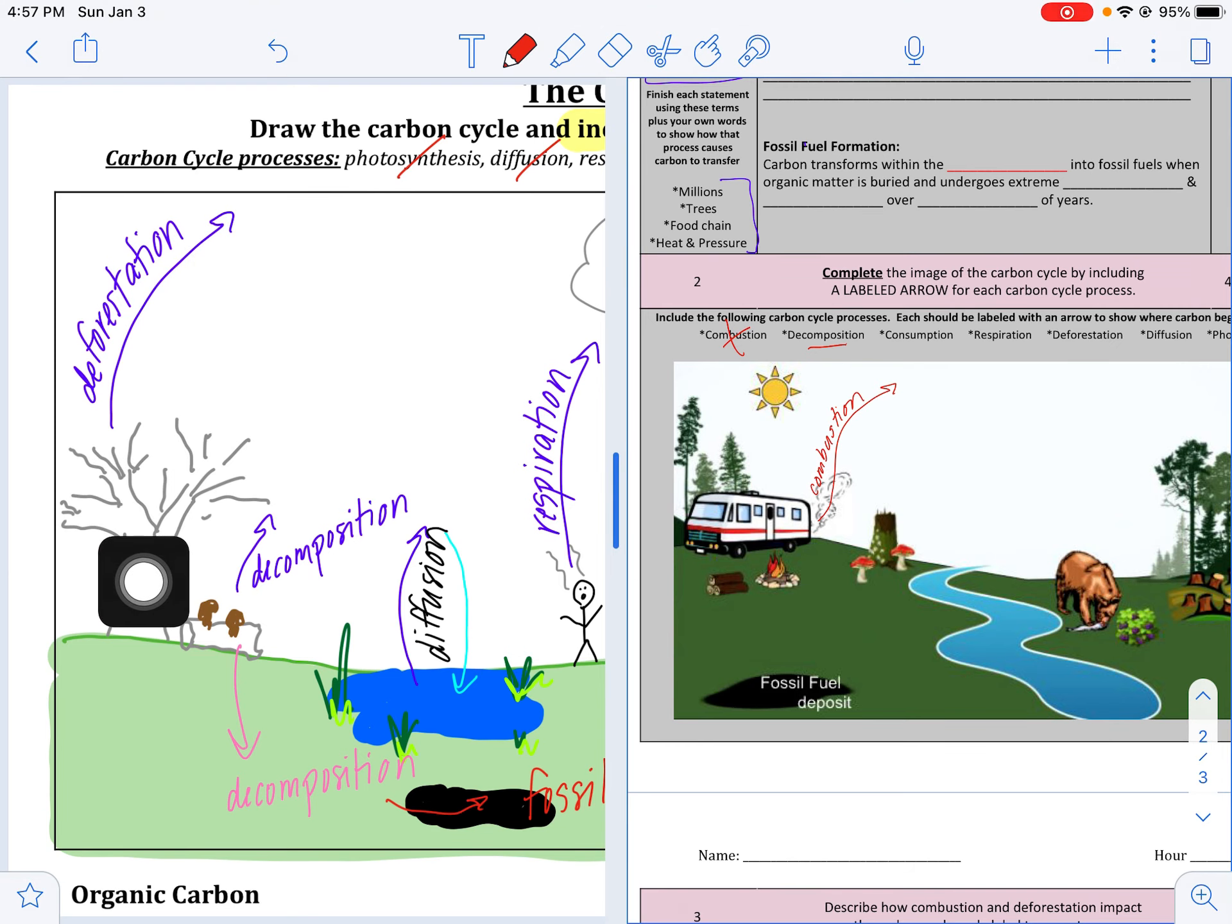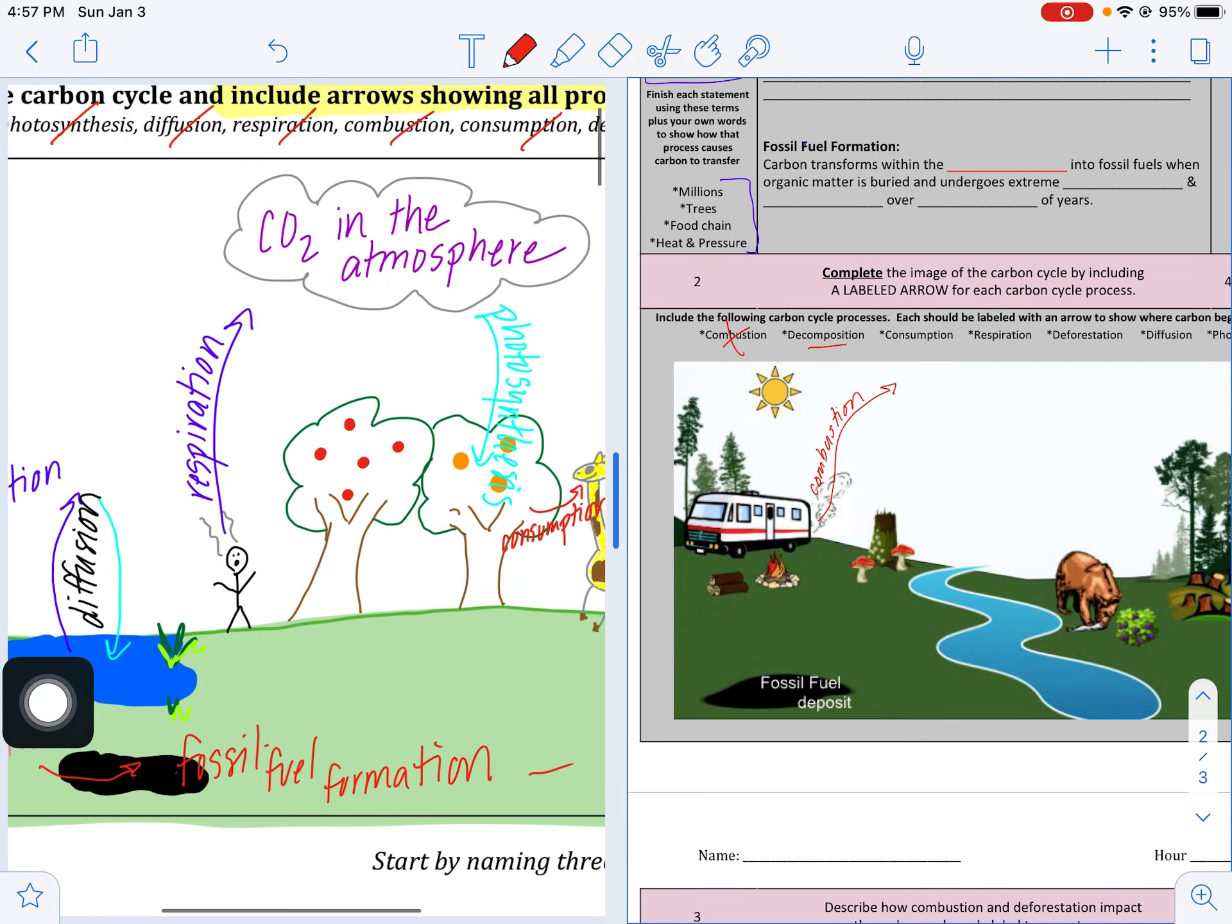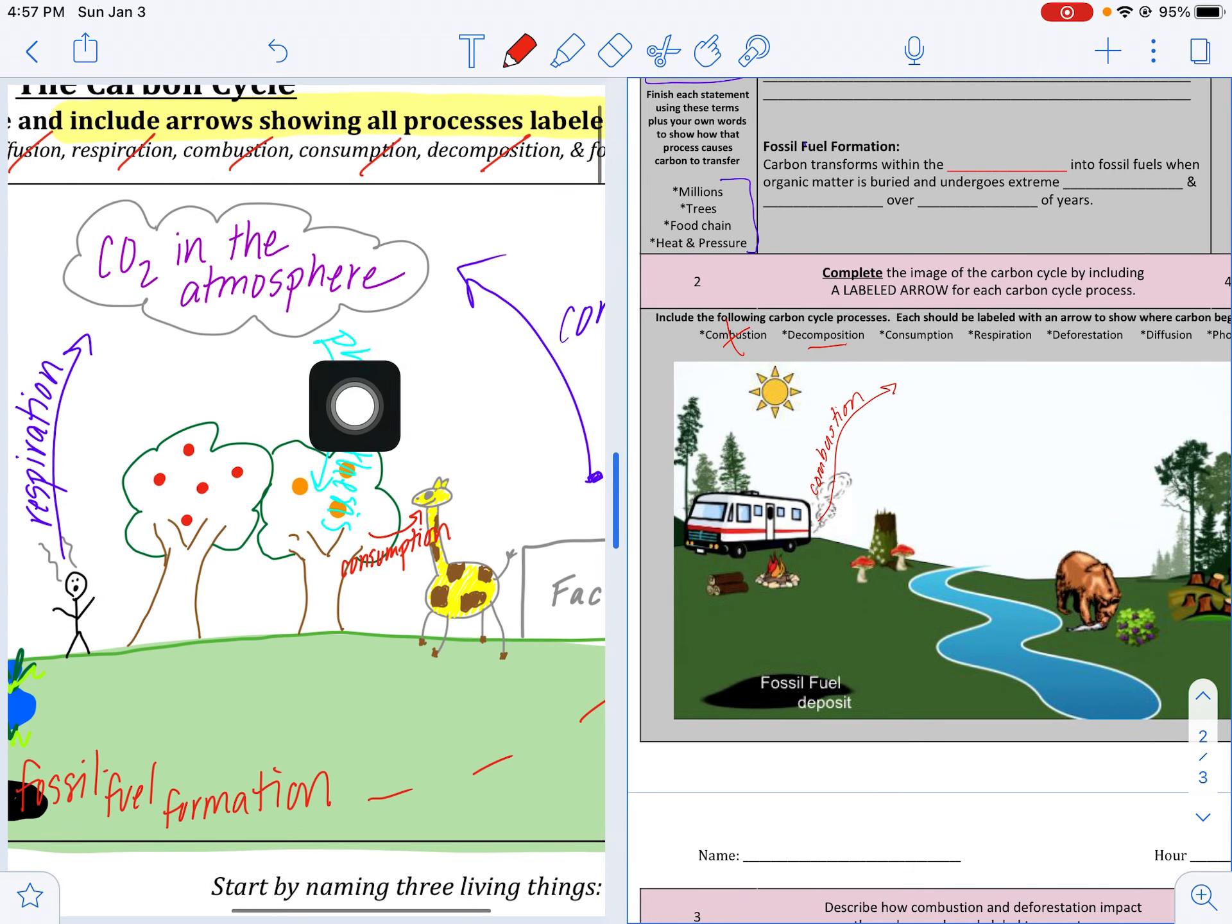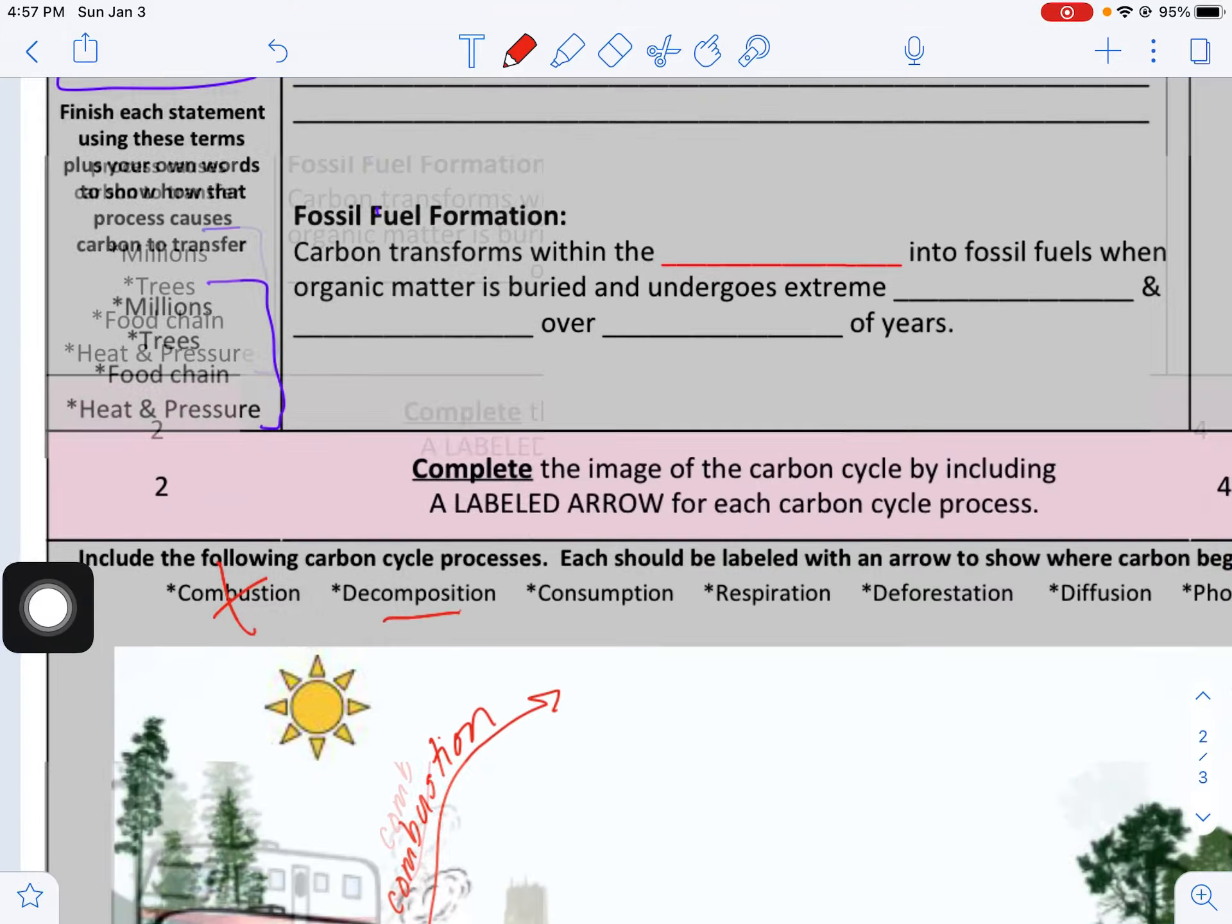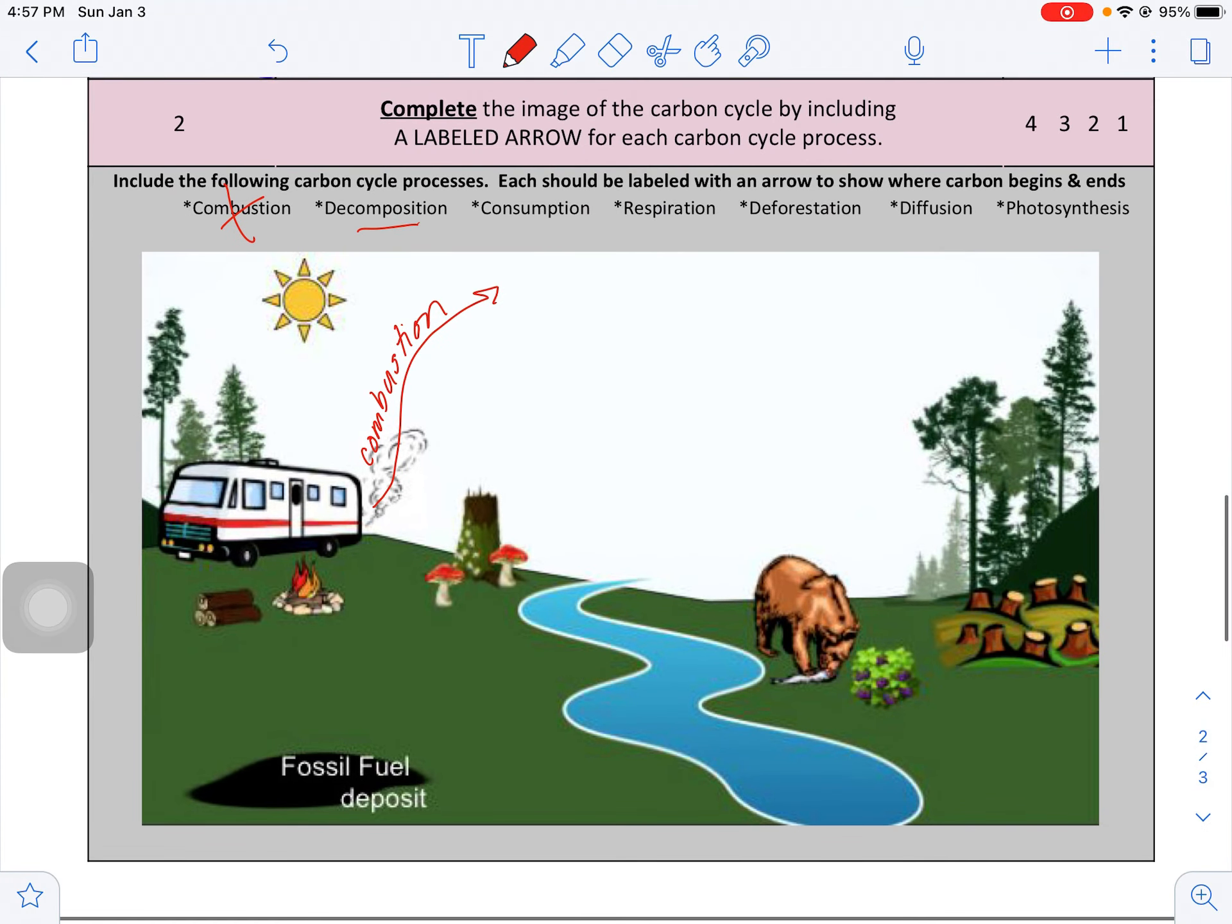Diffusion, remember, is two directions from the waterway. And finally, photosynthesis has to do with CO2 coming out from plants. So using your notes, you should be able to get all these arrows on there.